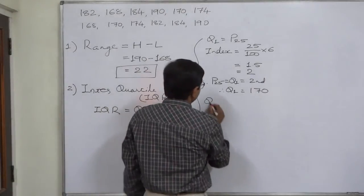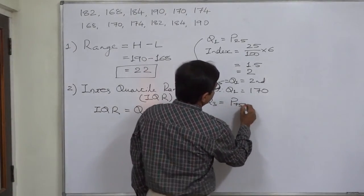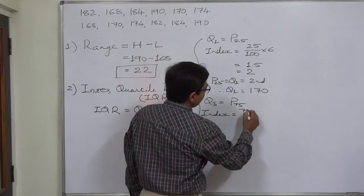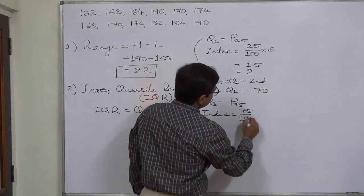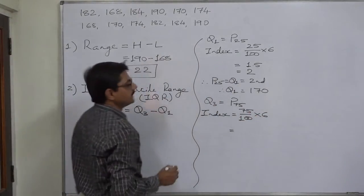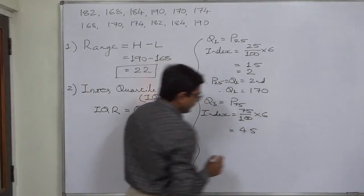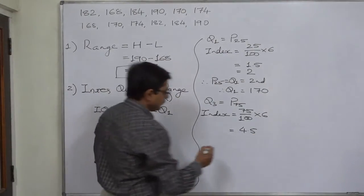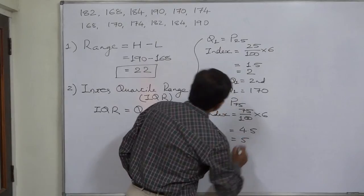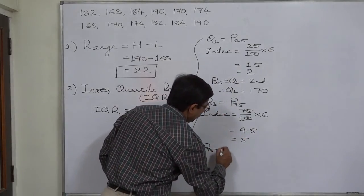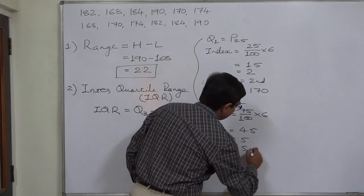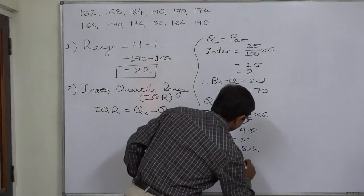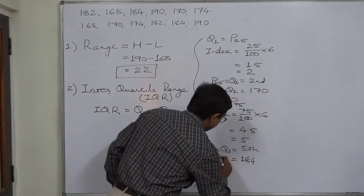Now let us find Q3, the highest quartile, that is P75. The index for P75 is 75/100 × 6, which equals 4.5. Again, the rule says if the index is not an integer value, go to the next integer value, that is 5. So our P75 or Q3, the highest quartile, is the fifth value. The fifth value is 184. So Q3 equals 184.